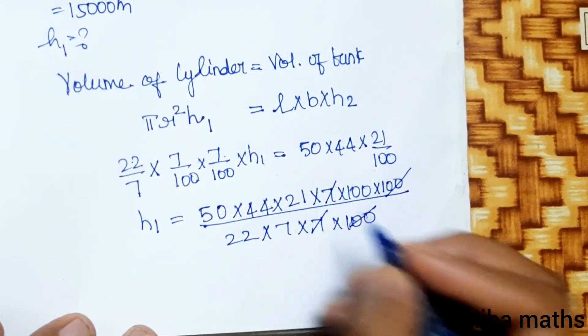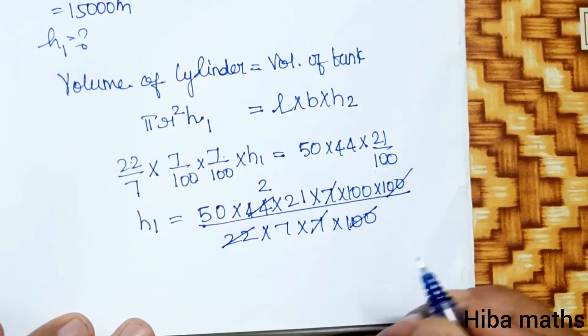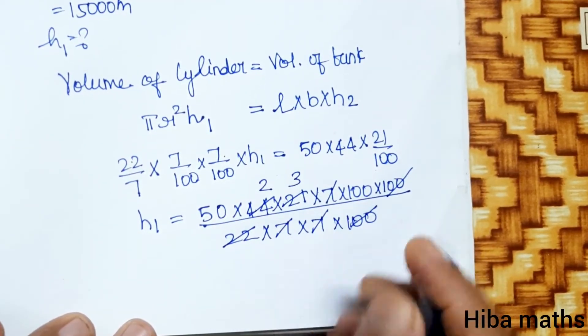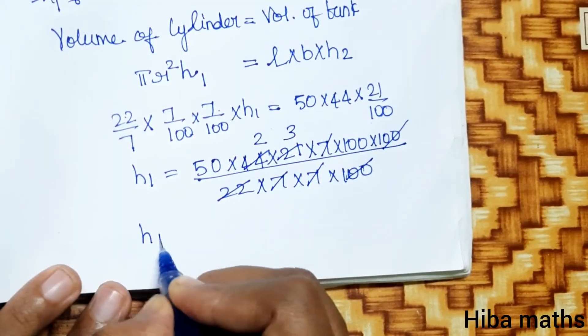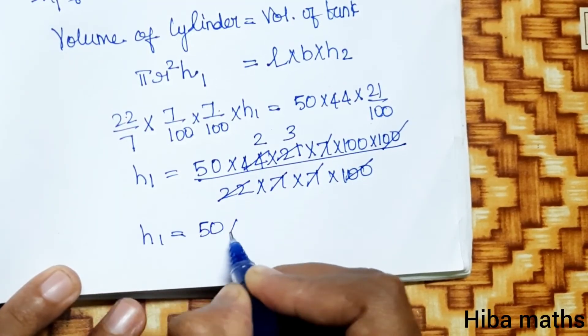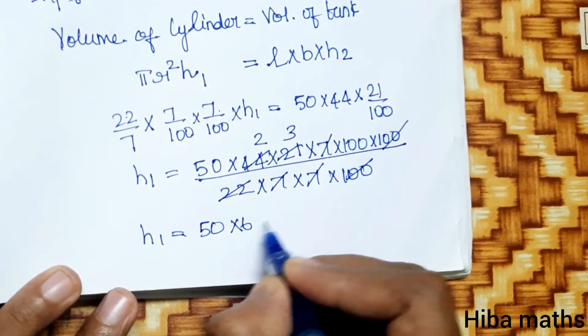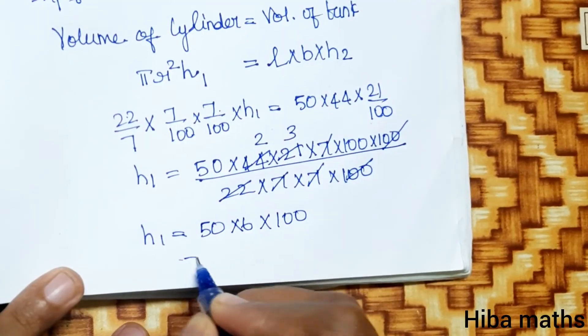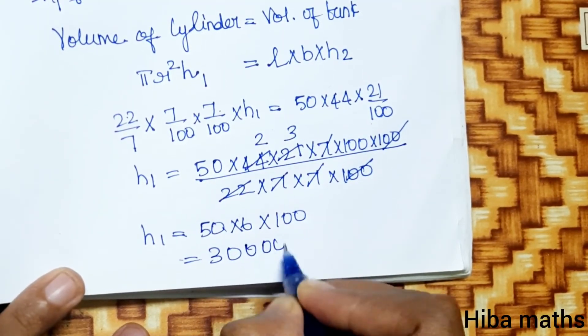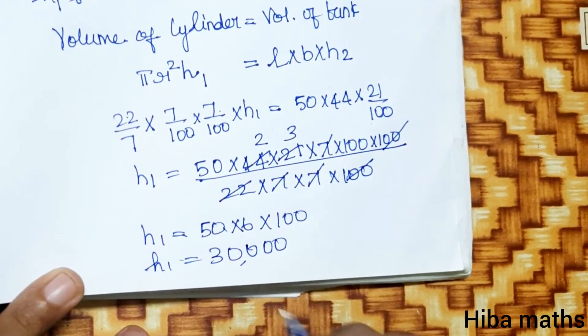Cancel 77. h1: cancel 22, 2 times. 7 times 7 equals 49. h1 value: 50 into 2, 3 times 6 equals 6 into 100. 6 times 5 is 30, so 30,000 is the height.